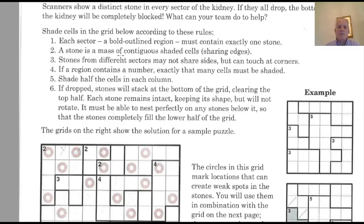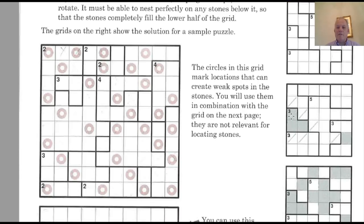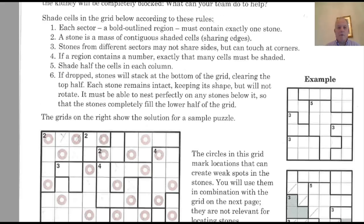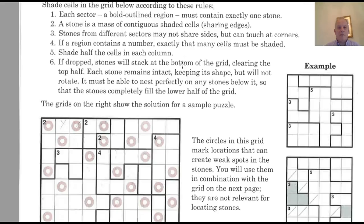So each sector contains a stone, which is a block of cells, but it could be any shape. Stones from different sectors can't share sides. If a region contains a number, exactly that many cells must be shaded. That's how in the example puzzle, you knew immediately that the three was all three cells there. That's clearly very important as well. Shading half the cells in each column and if dropped, they stack. So let's use that information and we'll go to the puzzle.